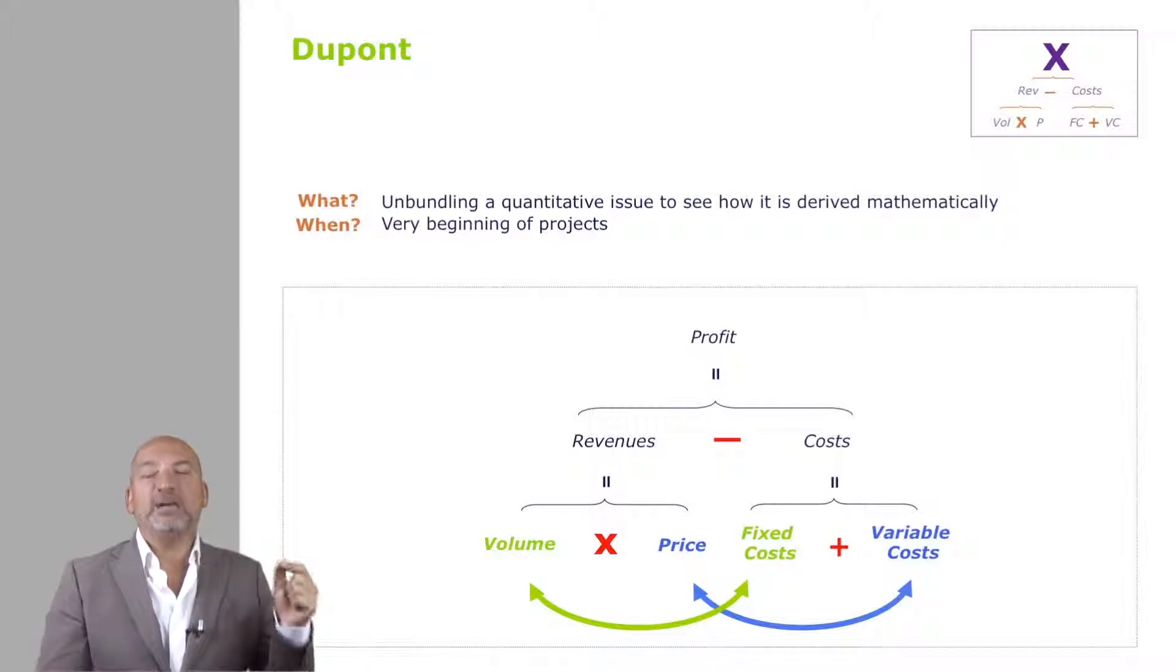Which means every time you sell one more item, you incur no variable costs. At which point, since the cost is zero, you're very happy to sell it for one cent or one penny, because it contributes to profit.